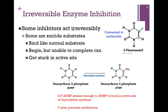Another example of irreversible enzyme inhibition involves substances that act as suicide substrates. They bind like the normal substrate and the reaction begins, but because of the chemical nature of the substrate, the enzyme can't complete the reaction and gets stuck in the active site. Here's the example of thymidylate synthase, which catalyzes the methylation of deoxy-UMP to form deoxy-TMP. What's key is we need the hydrogen atom at the number 5 position so that it can be replaced with the methyl group.